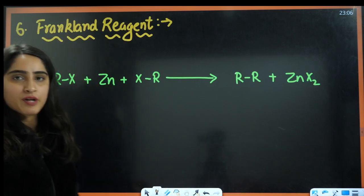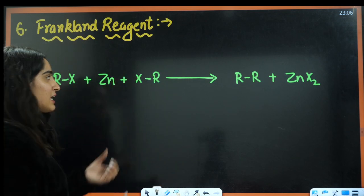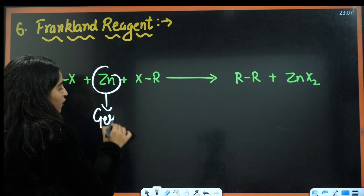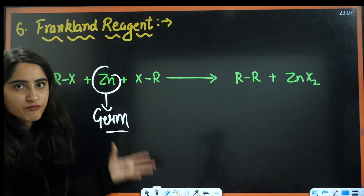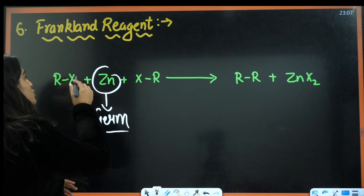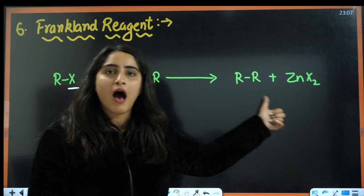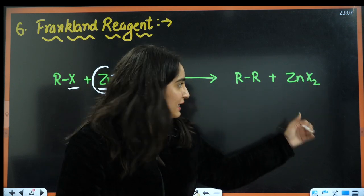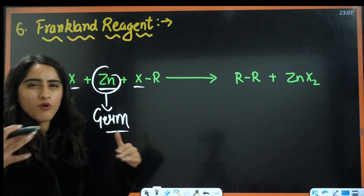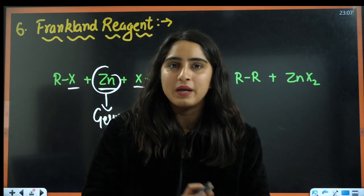Next is Frankland reagent. Instead of sodium, we use zinc here. You can remember this with the help of Germany — Germany has Frankfurt, so Frankland uses Zn. Zinc takes away both halogens (X and X), and there is combination of R and R giving alkane and ZnX₂. These are almost the same methods.